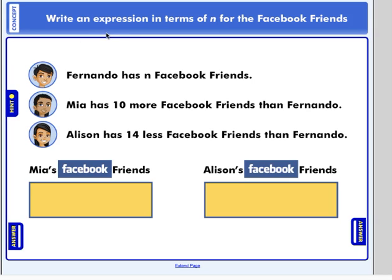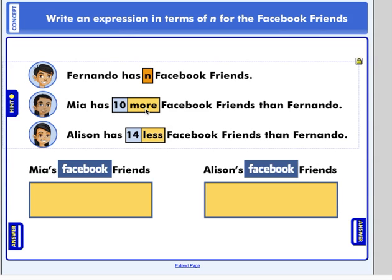Now let's try writing some expressions in terms of n for the Facebook friends here. Here's Fernando. Fernando has n Facebook friends. That n is a variable that stands for the number of Facebook friends that Fernando has. Here's Mia. Mia has 10 more Facebook friends than Fernando. And Allison has 14 less Facebook friends than Fernando. Now remember we just talked about those words that give us clues. More. 10 more. What does that look like? 14 less. What does that look like? We're using Fernando as a reference. He has n Facebook friends.